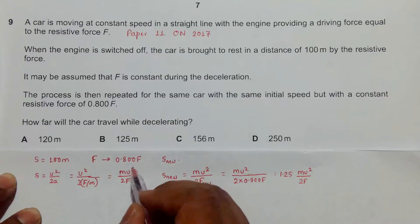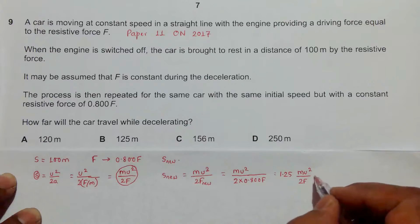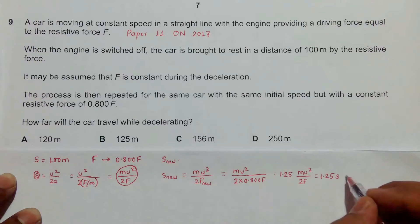So now we have m u squared over 2F is equal to s. Since we have s is equal to 100 meters, it is 1.25 into 100 equal to 125 meters.